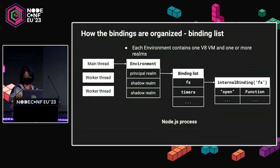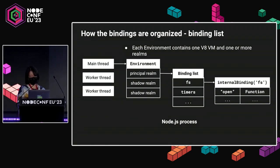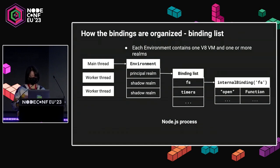This binding object is used to organize the functionalities that the C++ layer exposes to the JavaScript layer. This is how they are organized conceptually. In each Node instance — for example, the one on the main thread — there is one structure called environment. In each environment, there is at least one JavaScript realm. For now, there is usually just a principal realm, but when the TC39 shadow realm proposal goes through, there will be multiple realms, each one for each shadow realm. Each realm also contains a list of bindings, organized as keyed objects — for example, one for FS, one for timers, and so on. The JavaScript land can retrieve these objects using the internal binding call. And in that particular FS binding, there are a bunch of keyed properties — for example, the native open function that can be invoked from the JavaScript land.